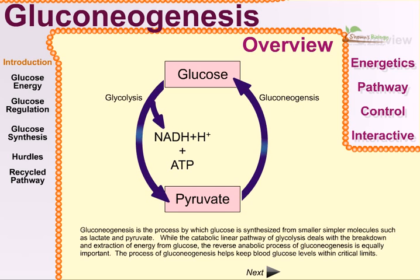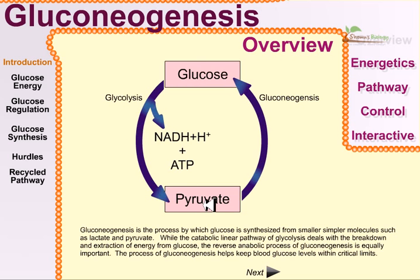Gluconeogenesis is the process by which glucose is synthesized from smaller, simpler molecules such as lactate and pyruvate. While the catabolic linear pathway of glycolysis deals with the breakdown and extraction of energy from glucose, the reverse process of gluconeogenesis is equally important. Gluconeogenesis is an anaerobic pathway — it does not need ATP. The process helps keep blood glucose levels within critical limits, because we need a particular level of glucose in our blood to avoid disrupting many functionalities.